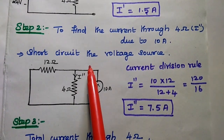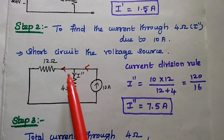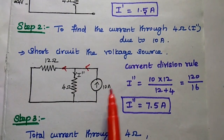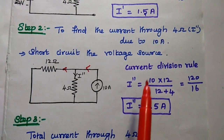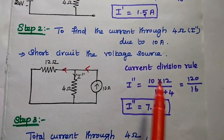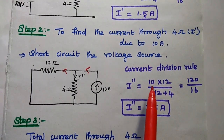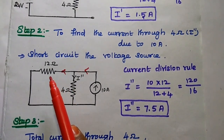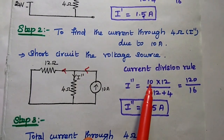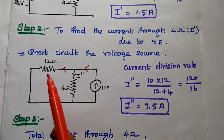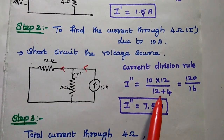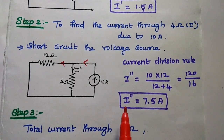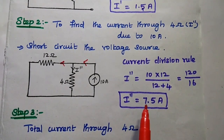The current from this 10 ampere source is getting divided between these two branches. Current through this 4 ohm resistor is I double dash due to this 10 ampere source, so here we are going to use the current division rule. The total current is 10 multiplied with 12 ohm — the opposite resistor — divided by the total resistance 16. So we can get 120 by 16, and I double dash is equal to 7.5 ampere.